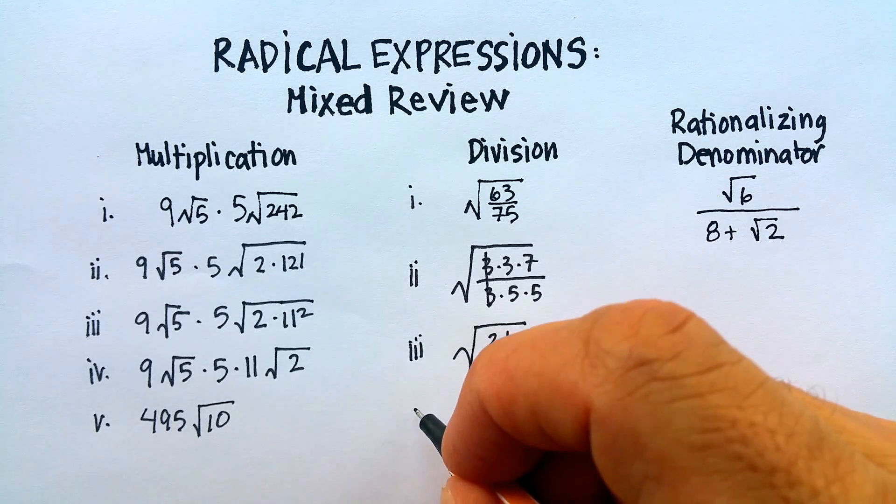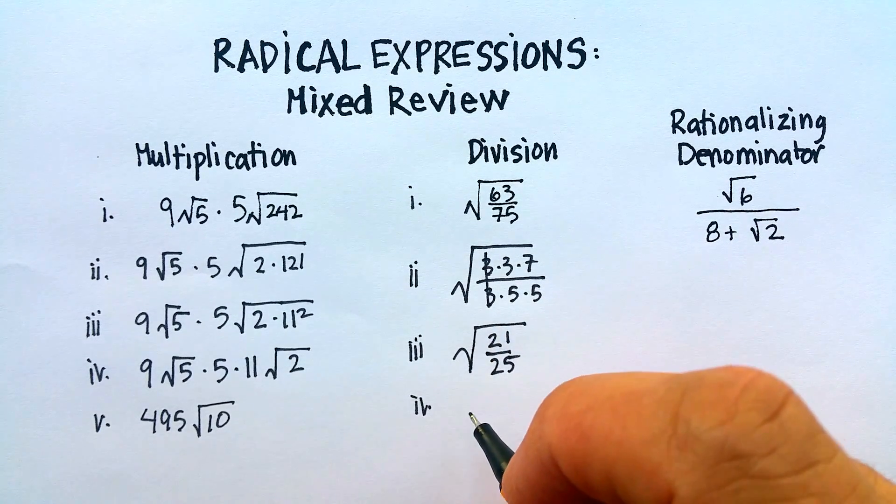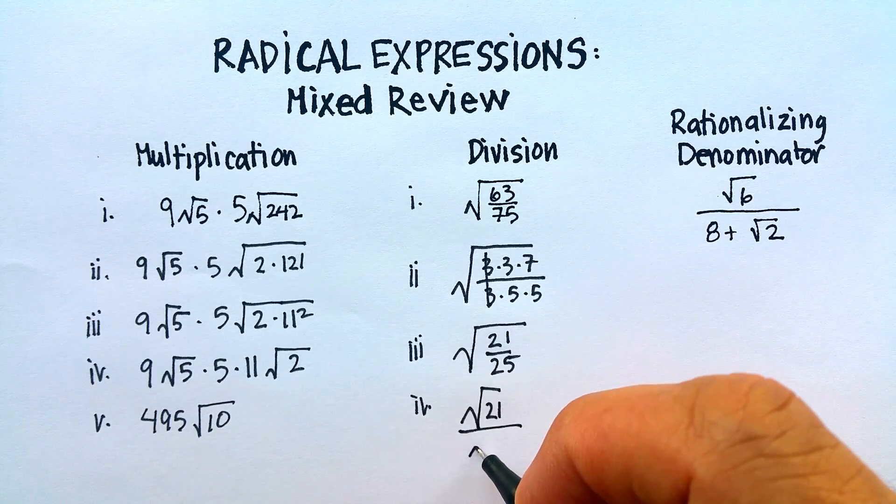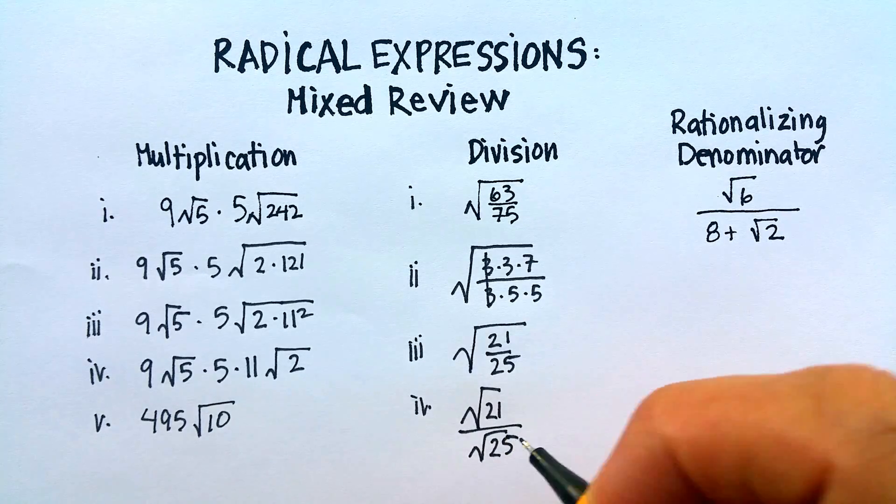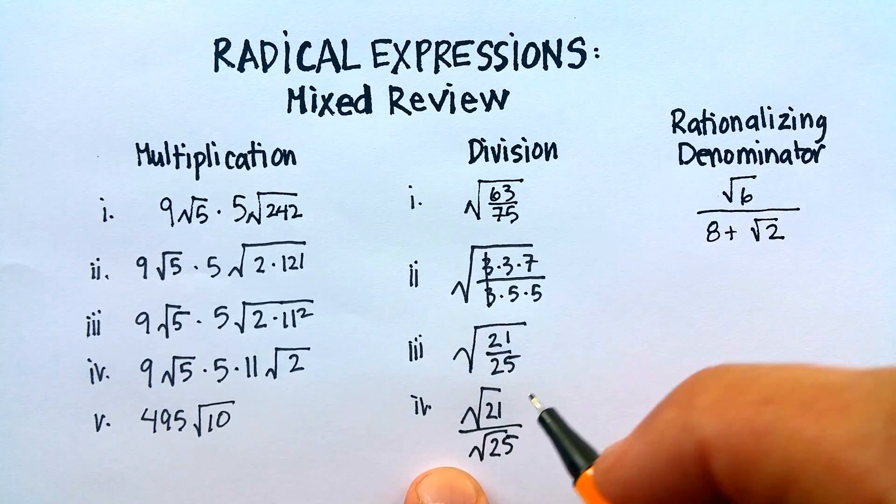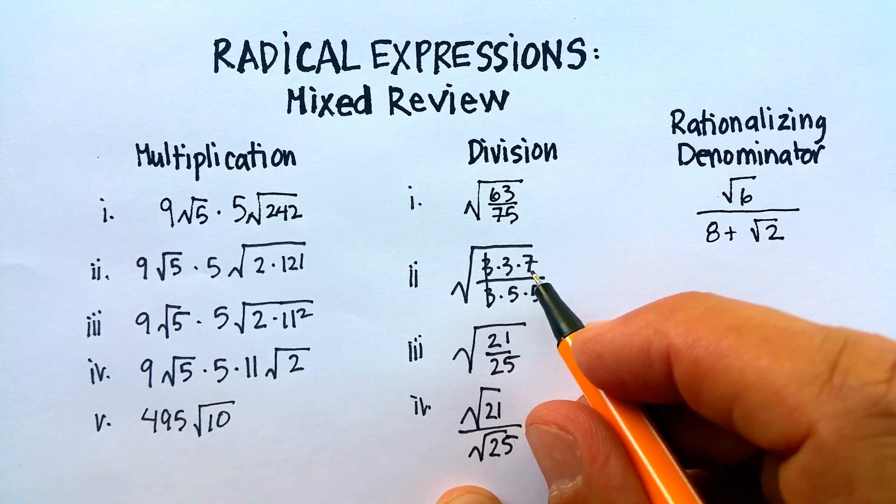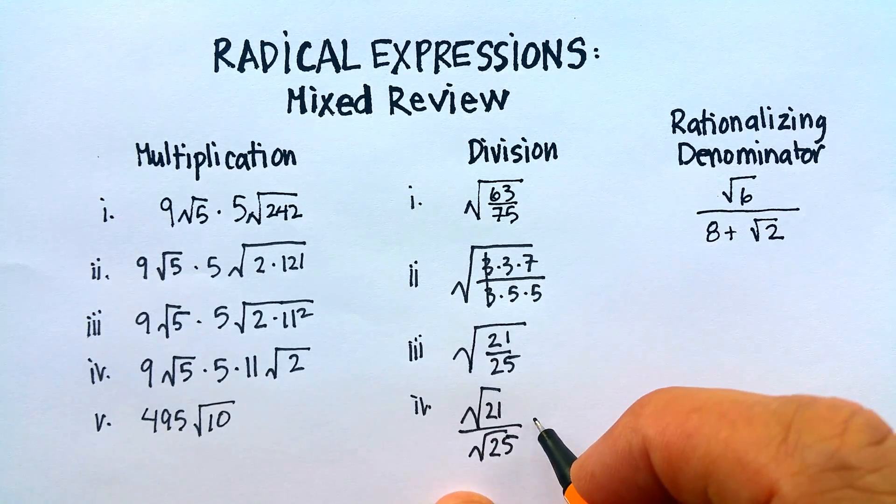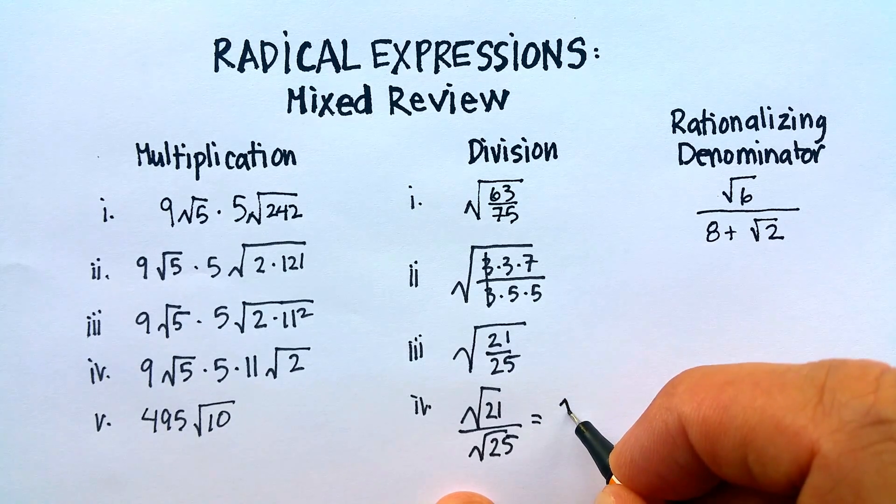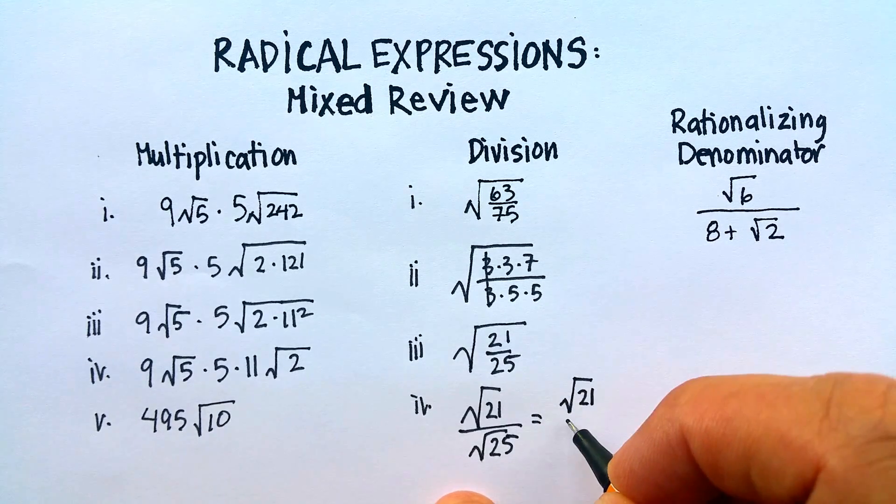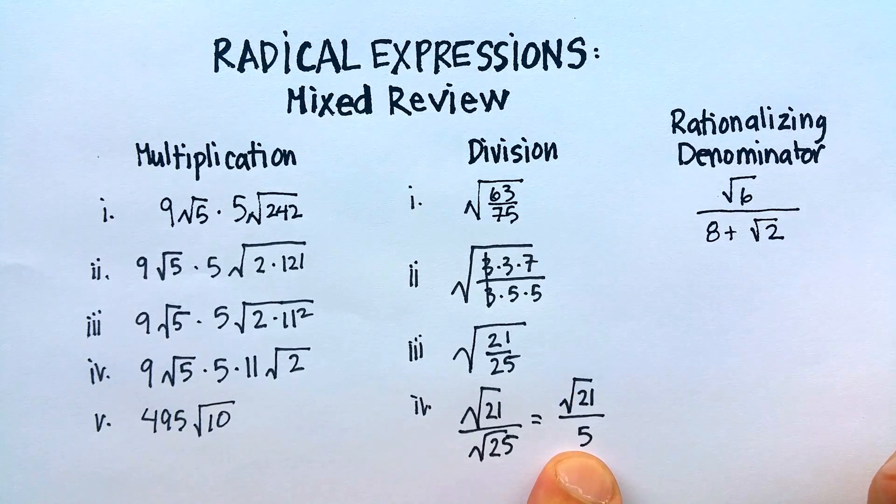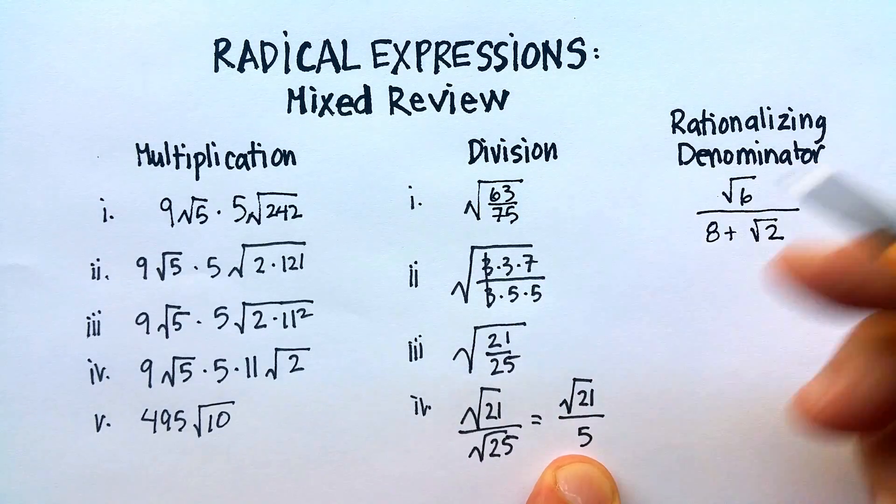Continuing on, I'm going to use that second technique that I told you about. I'm going to say the square root of 21 over the square root of 25, since I can break those out. 21 doesn't break out any further, because 3 times 7 is already prime factors, but the square root of 25 is 5. So my final answer is going to be the square root of 21 over 5.